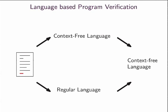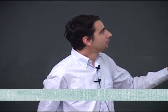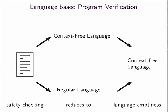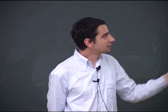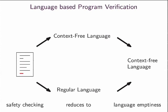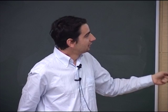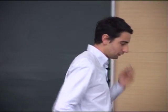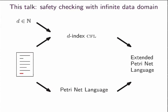If you look at the type of those languages: on the top, for the control, you have a context-free language; at the bottom, we have a regular language; and the intersection of the two is again a context-free language. The safety checking problem reduces to language emptiness on this context-free language. This approach has limitations — one serious limitation is that for the regular language, you can only model finite data domains or finitized data domains. In this talk, I will show what you can do when you want to consider infinite data domains.